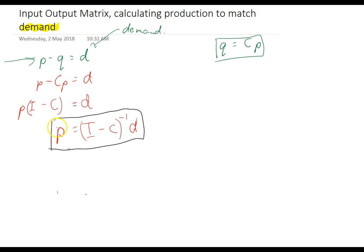Production, the amount of production required is equal to I minus C to the negative 1 times the amount of demand that we're trying to meet. So, now that we have this information, we can actually use it inside of a question.